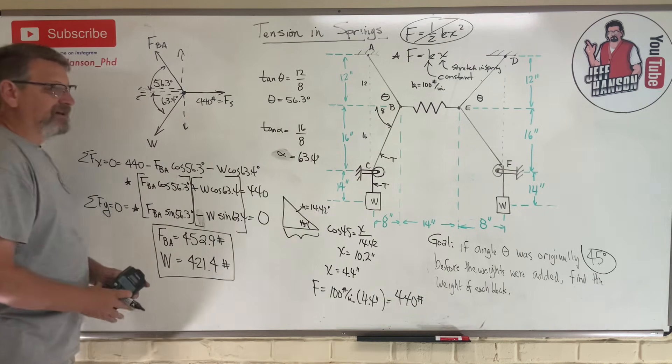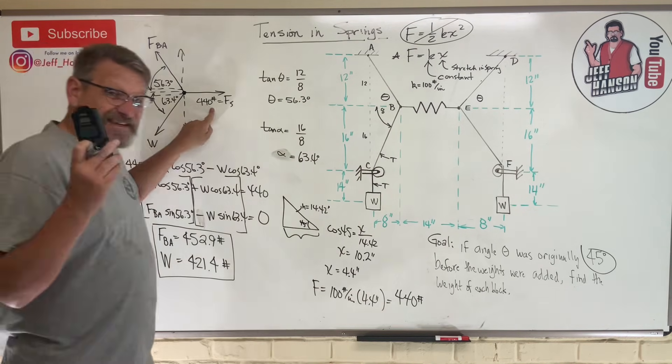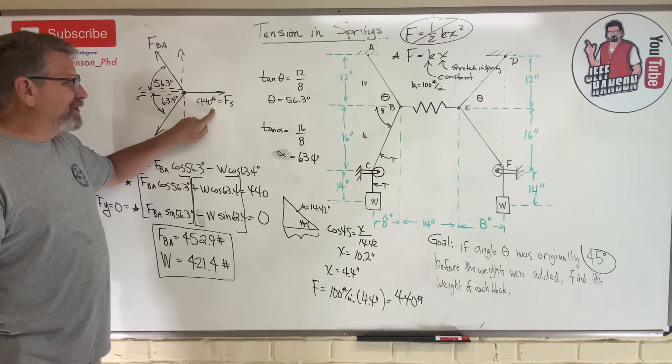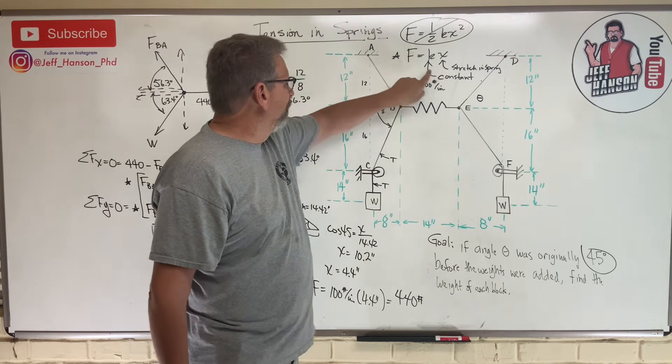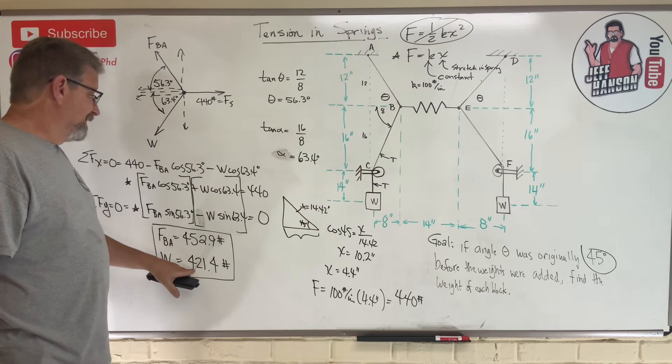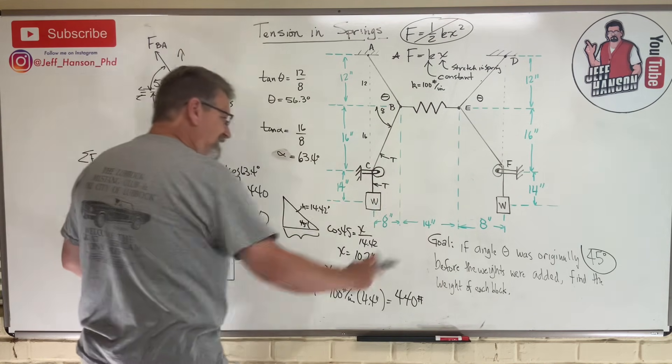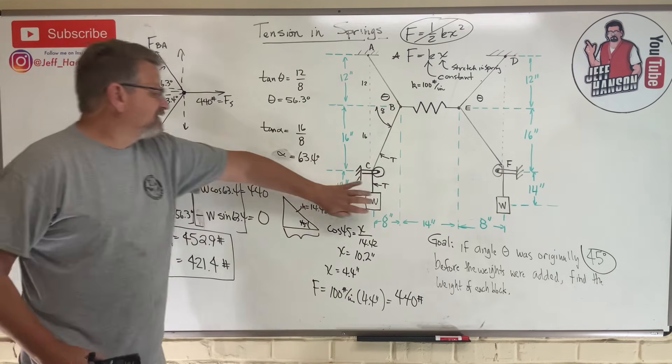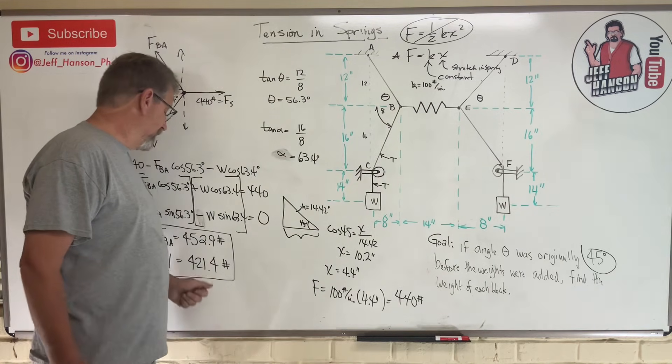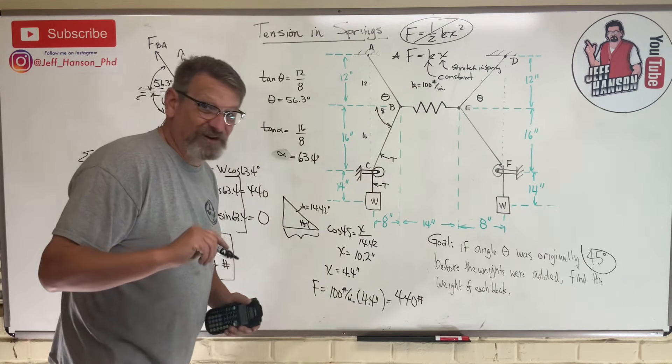That is how you do that. The hardest part about this was taking this force in the spring, which was actually given to us but just in a really weird way. We had to do a little bit of geometry to come up with the stretch in the spring and multiply by the spring constant to get that force. Here's a question for you: do I take this w and divide that by two, like that's half of it and that's half of it? No, this w is 421.4, that w is 421.4. I hope you don't mess that up. I hope this helps and I'll see you on the next lesson.